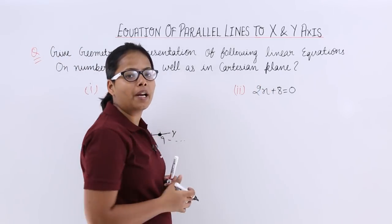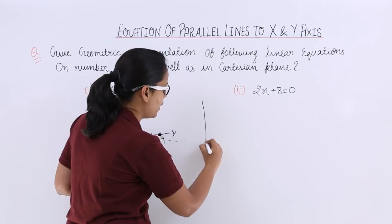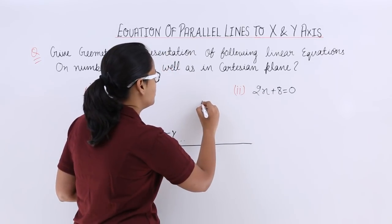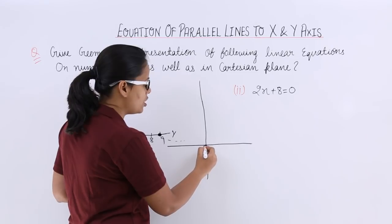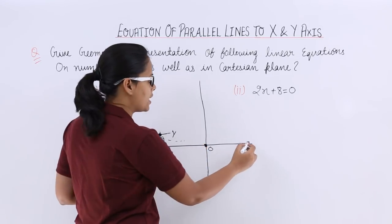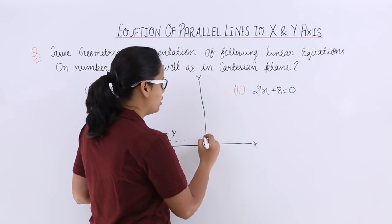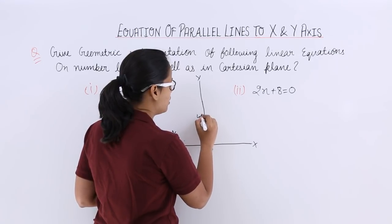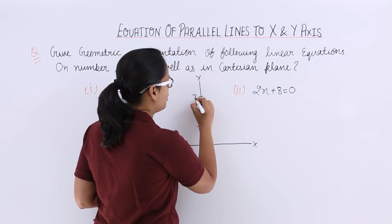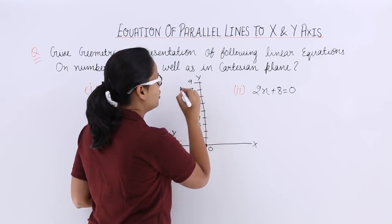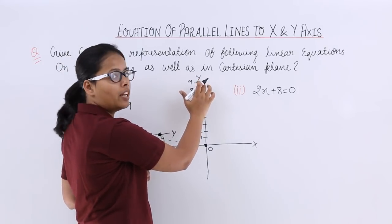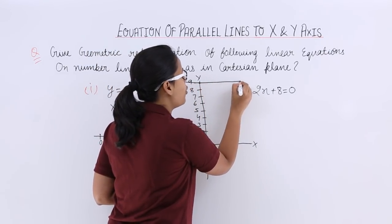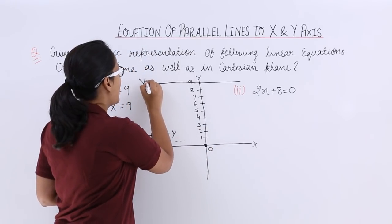Now you have to plot this in a Cartesian plane as well. You know how to plot a Cartesian plane. This is the origin — origin where two lines intersect each other. This is the x axis, this is the y axis. What you need to do is mark all the points on this y axis. Here y is equal to 9, so the value 9 for y will be here. You will draw a line passing through this point. This line is y is equal to 9.